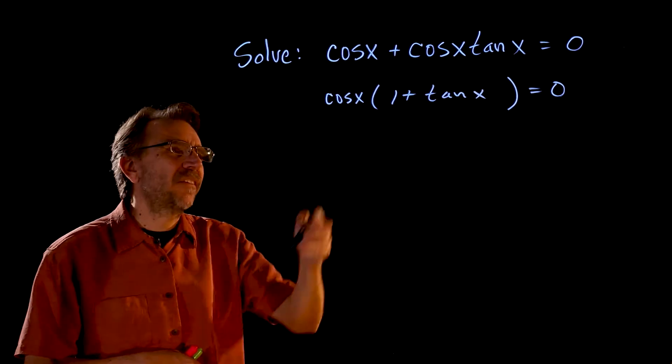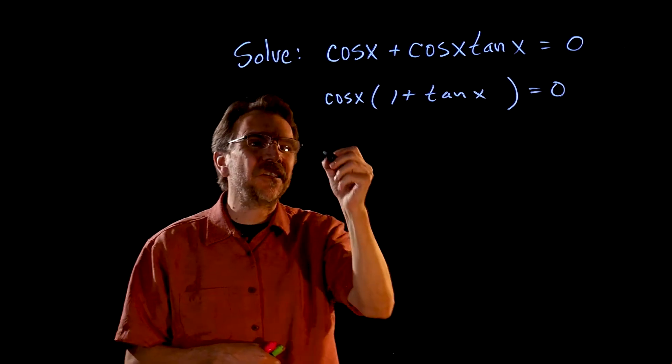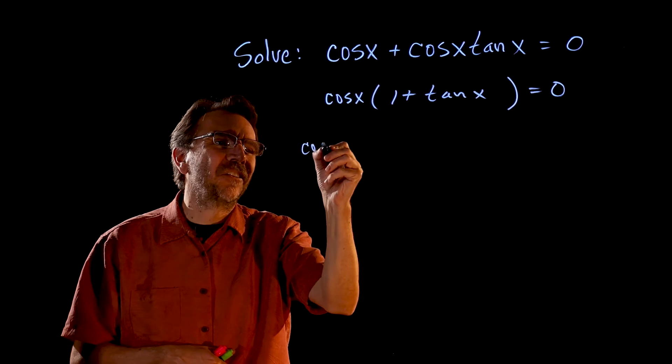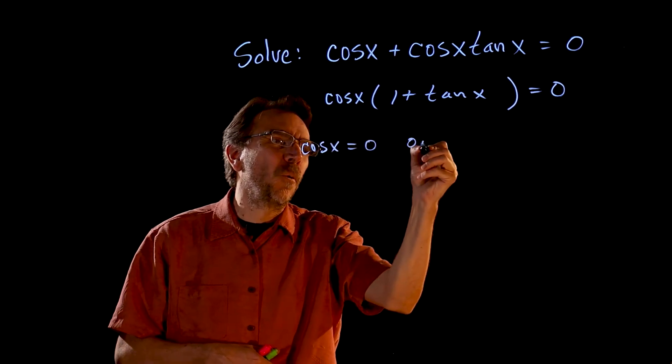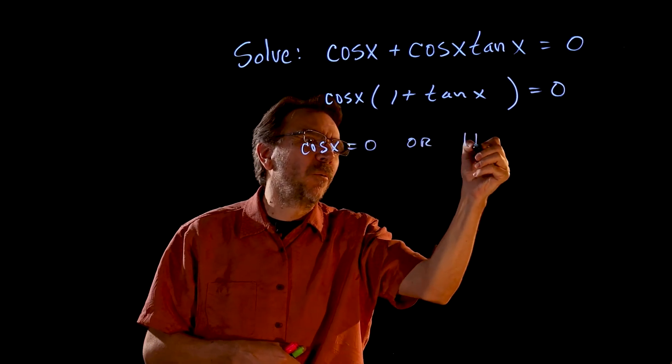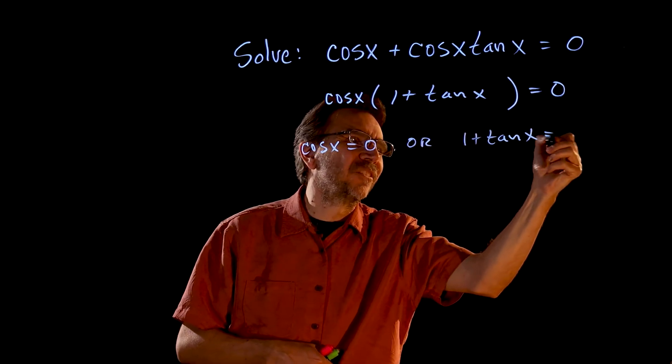Once you get it factored, you then set each factor equal to 0. So we have cosine x equals 0, or 1 plus tangent x equals 0.